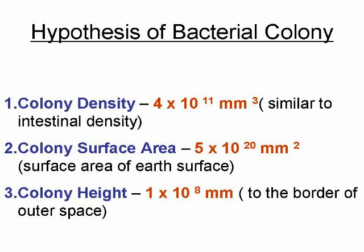Let us now calculate the total number of mutations that could occur in a dense bacterial colony similar to your intestinal colon environment — that is 4 × 10^11 bacteria per millimeter cubed — which covers the entire surface of the Earth, or 5 × 10^20 millimeters squared, and extends 100 kilometers, or 1 × 10^8 millimeters upwards.